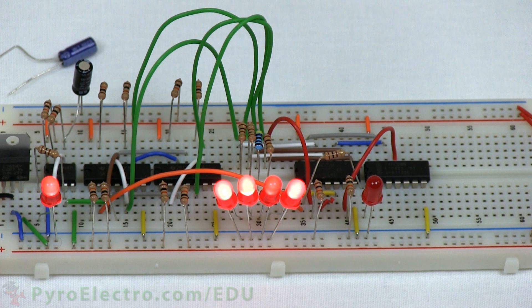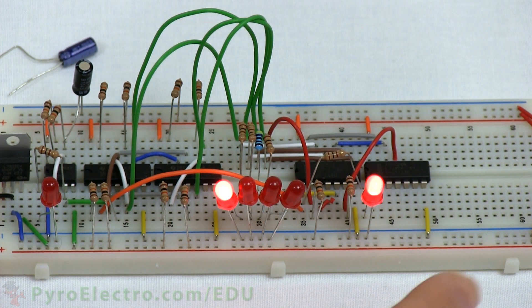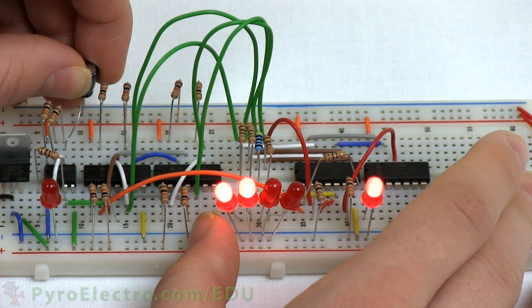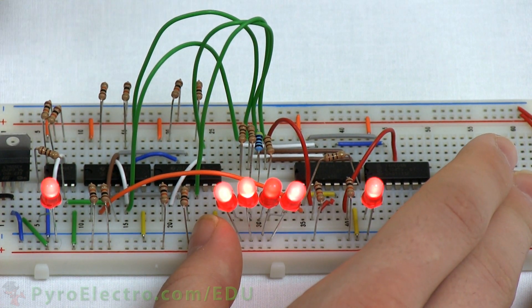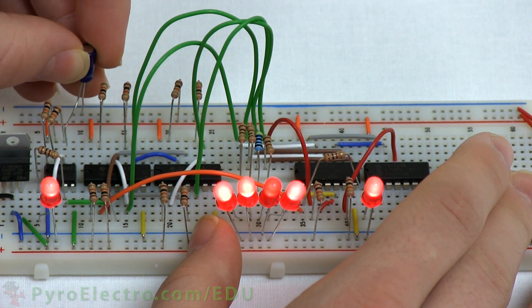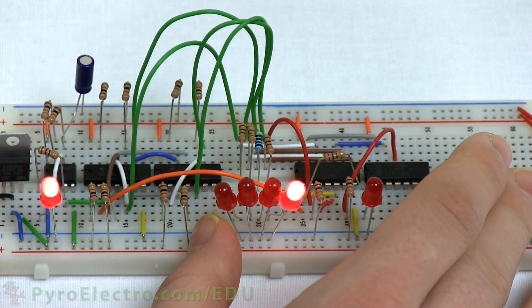Let's swap out the 100 microfarad capacitor for the 10 microfarad capacitor to see things move a little more quickly. When the system moves faster like this, it is easier to see how the LEDs are chasing after each other.